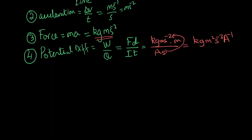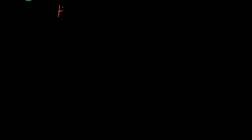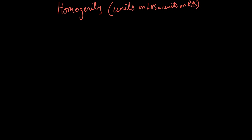Another important topic is the homogeneity of an equation. Homogeneity means the units on the left-hand side must equal the units on the right-hand side. For example, if a length is 5 cm, and it equals 3 + 2, then 3 must be in centimetres and 2 must be in centimetres. You can't add centimetres and seconds to get centimetres — the units on both sides of any equation must match.